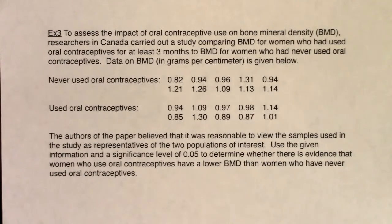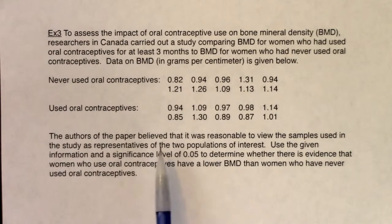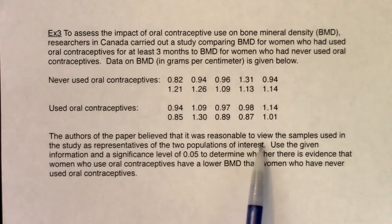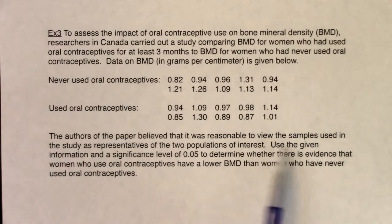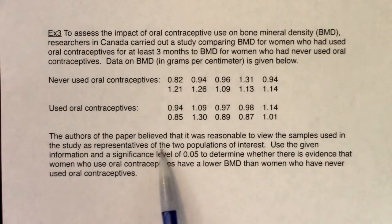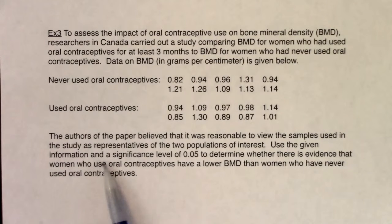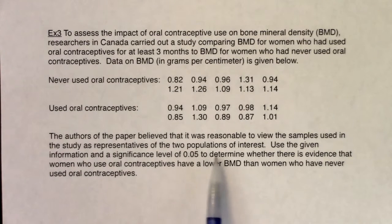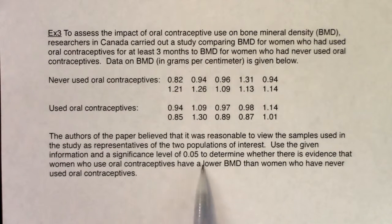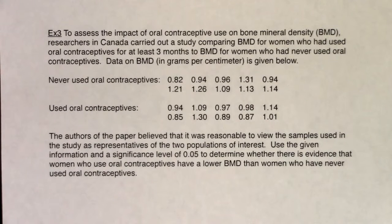The authors of the paper believed it was reasonable to view the samples used in the study as representatives of the two populations of interest. Use the given information and a significance level of five percent to determine whether there is evidence that women who use oral contraceptives have a lower BMD than women who have never used oral contraceptives.